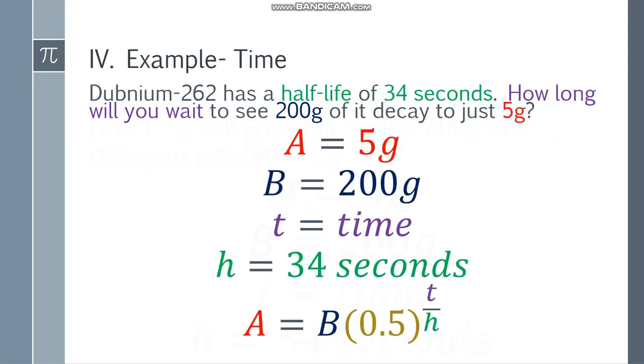Now, let's place the formula and substitute the values. So I want you to listen carefully because this will be a little bit complicated. So we have 5 is equal to 200 times 0.5 to the T over 34. Again, remember your properties of logarithm. We have to use logarithm here when finding the variable and it's in the exponent.